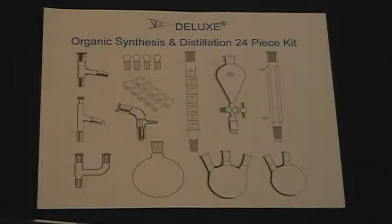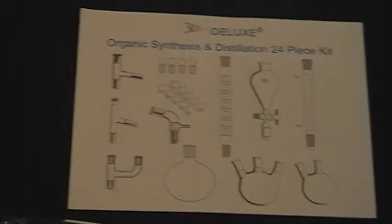All glassware in this kit is made from low-expansion borosilicate glass, and all joints are 24/40. All components are manufactured in our ISO 9001 qualified factories and meet the strict ASTM quality requirement. This kit comes complete with the following.